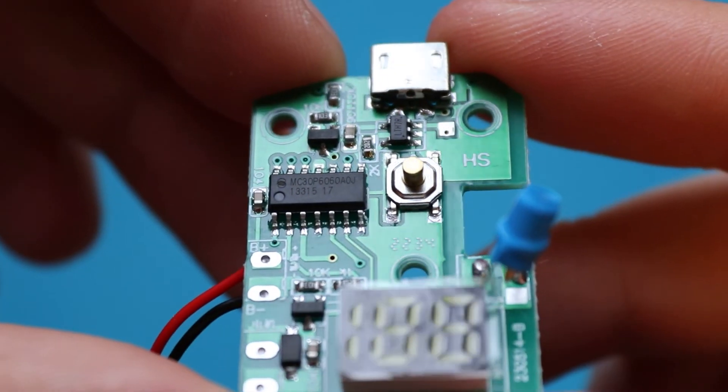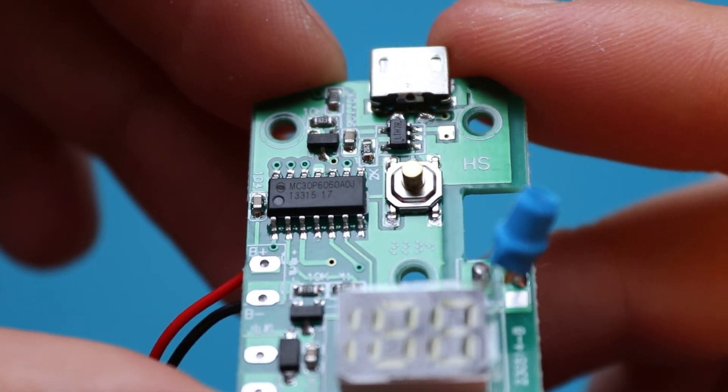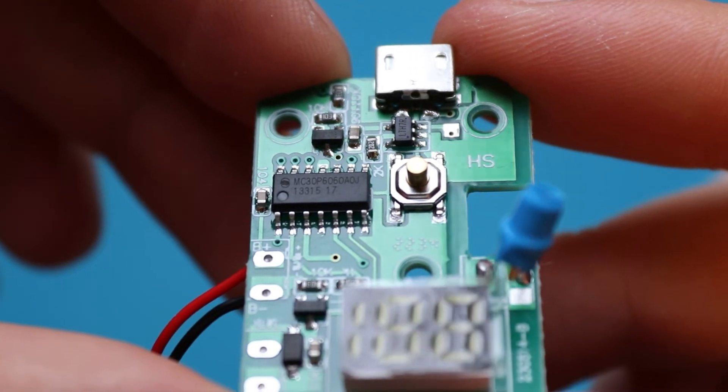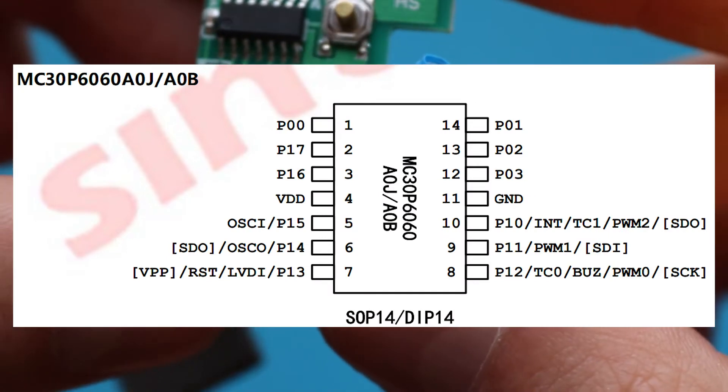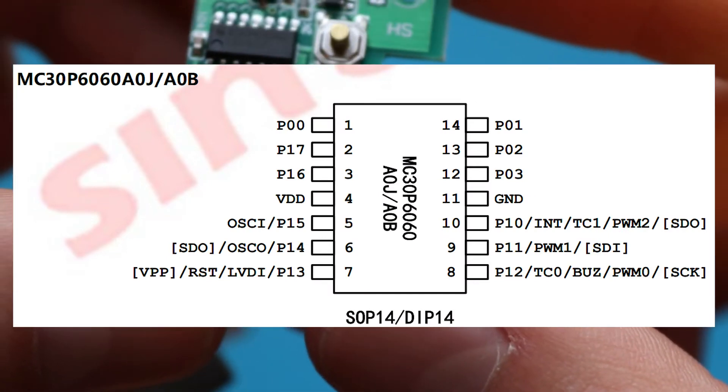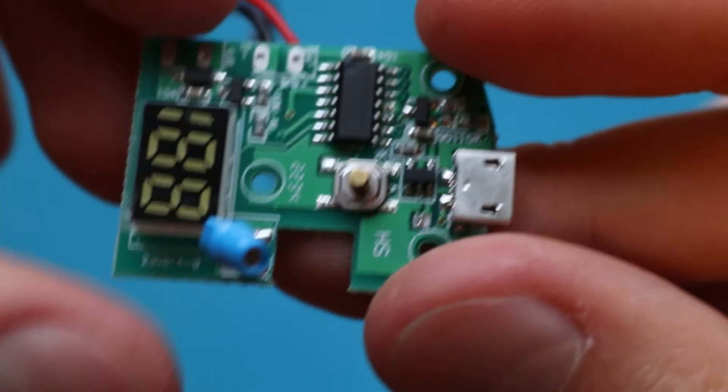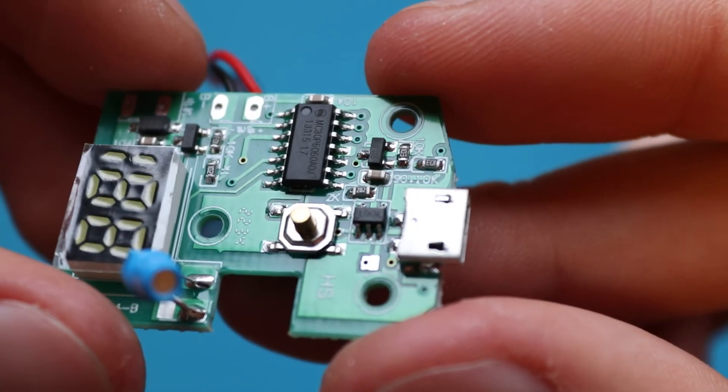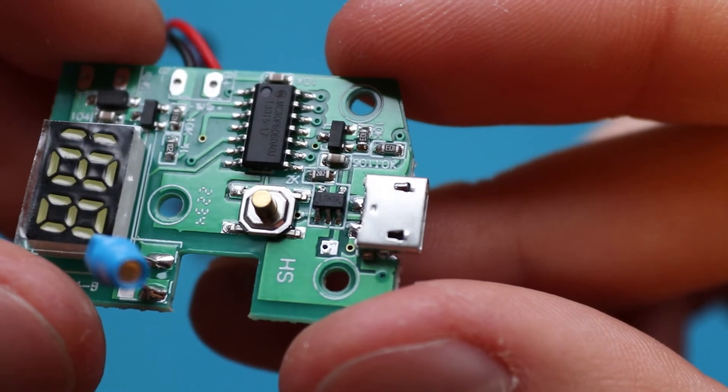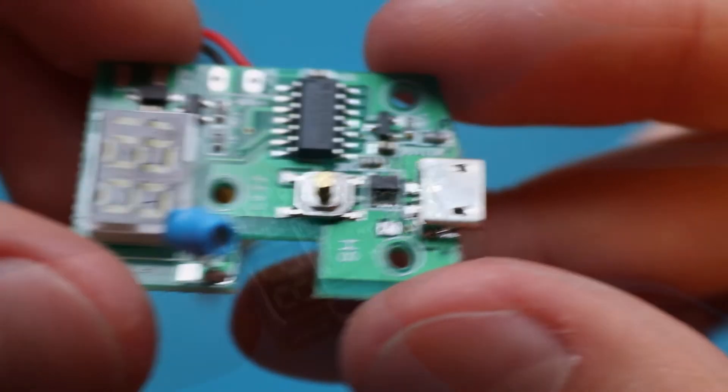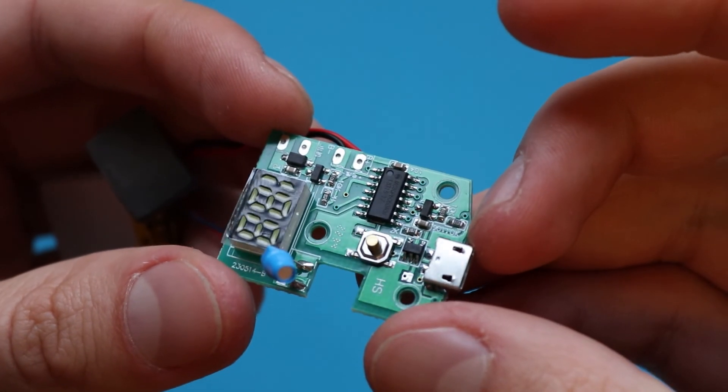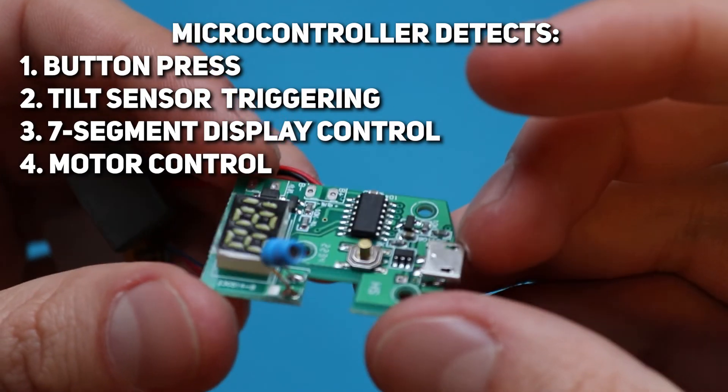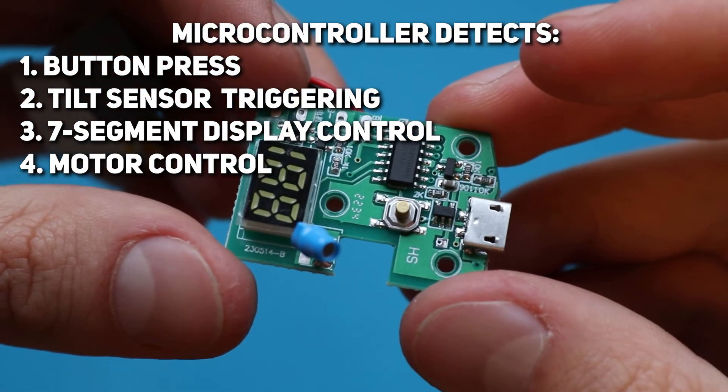Decision when to apply power to the motor as well as control of the entire device is made by the microcontroller. It is here. It is a Chinese controller and I don't think it is worth looking through its datasheet. I am sure there is nothing interesting for you and me. Let's better look at how the system works in general. There are several functions of the controller. It detects when the button is pressed, when the tilt sensor is triggered, and it also controls the 7-segment display and the motor.